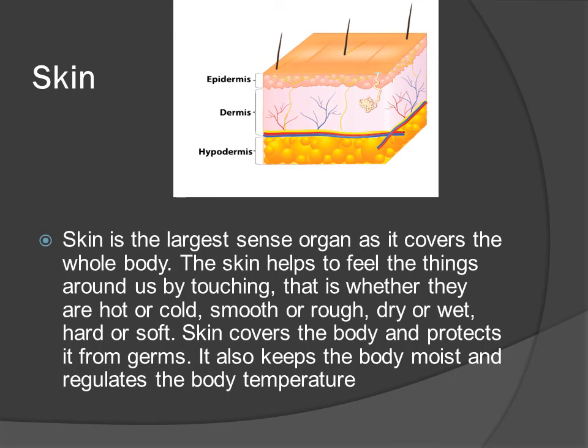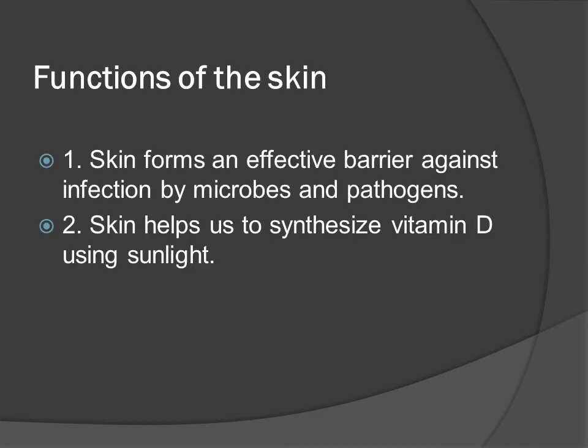Skin is the largest sense organ as it covers the whole body. The skin helps to feel the things around us by touching — whether they are hot or cold, smooth or rough, dry or wet, hard or soft. Skin covers the body and protects it from germs. It also keeps the body moist and regulates body temperature. The skin consists of three layers: epidermis, dermis and hypodermis. Skin forms an effective barrier against infection by microbes and pathogens, and helps us synthesize vitamin D using sunlight.